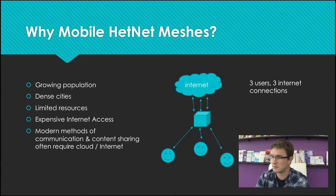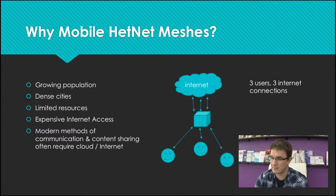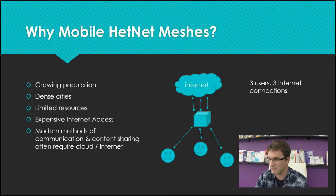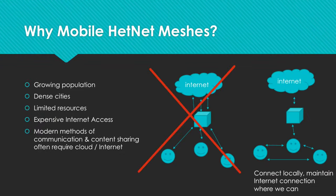So why should we use mobile mesh hetnets? They're often most useful in places with growing populations, dense cities, limited resources, and expensive internet access. They're best where modern communication tools often require cloud or internet. If you think of something like Slack or Dropbox, all of your communication right now — even when you want to talk to somebody in the same room — goes through your router to the internet, to a service somewhere on the cloud, and then back down to the person sitting beside you. There's all this overhead that we can avoid.